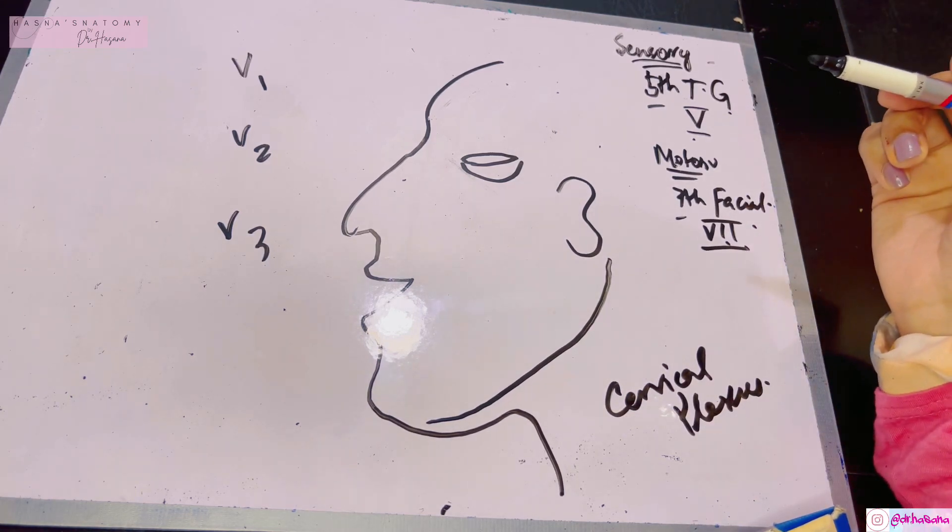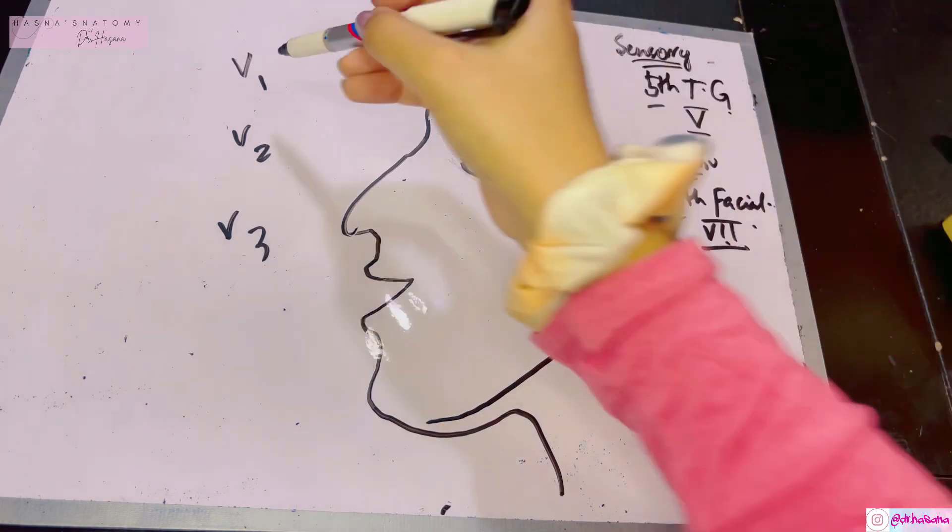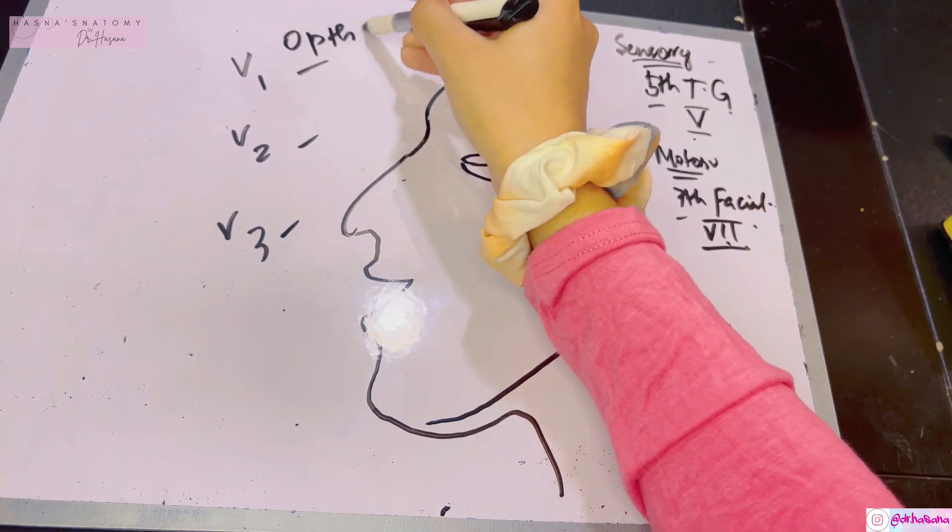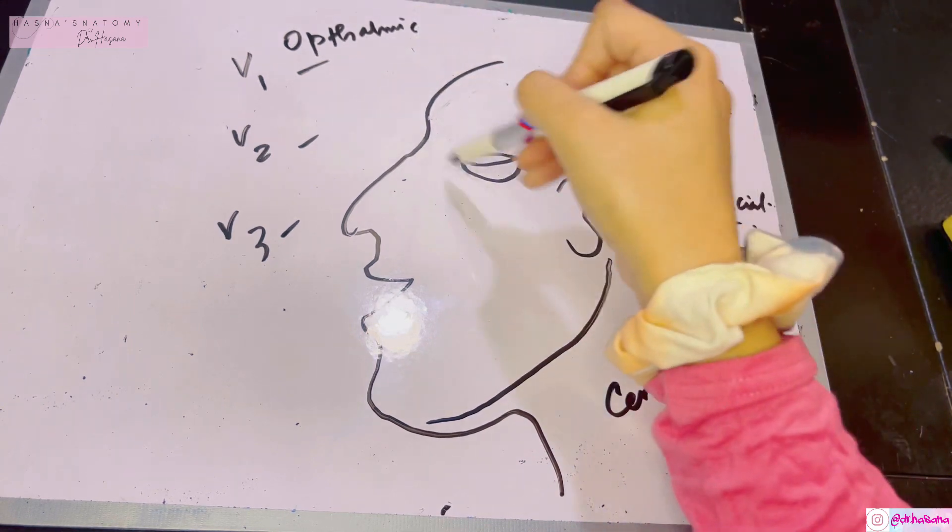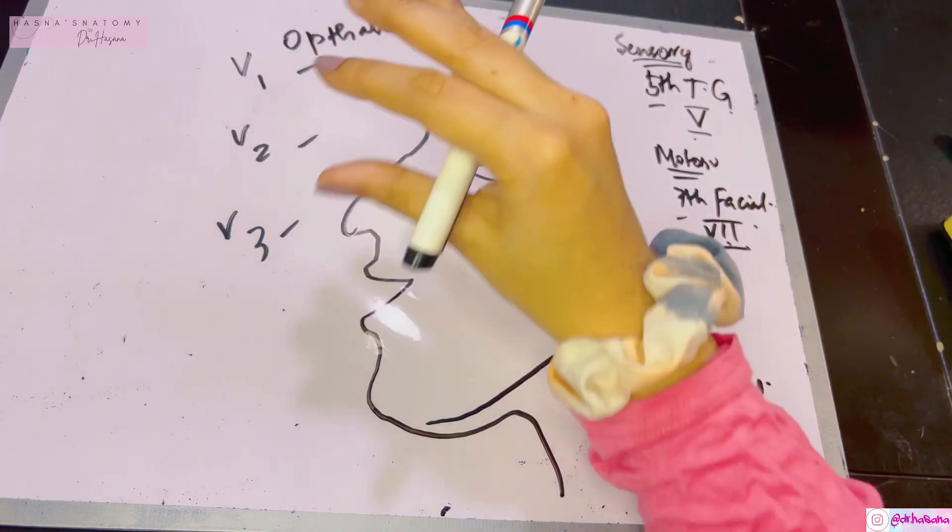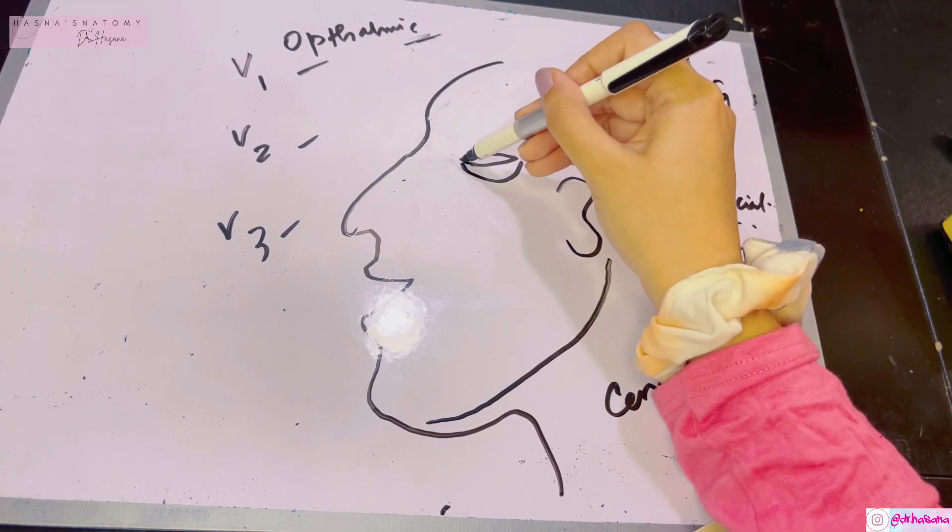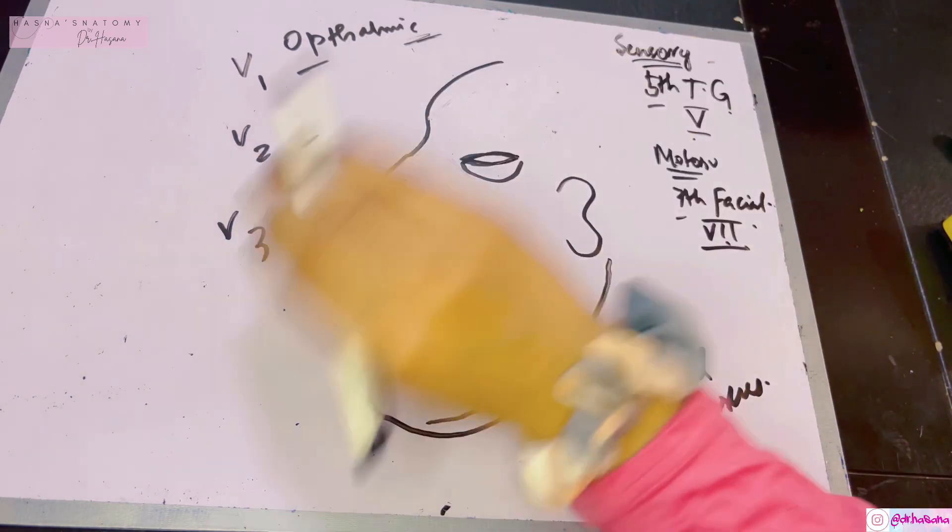We're discussing how the fifth trigeminal nerve supplies the face. It has V1, V2, V3 branches. V1 is known as the ophthalmic branch and remains in the eye area. Remember that ophthalmic's lower limit is the upper eyelid.